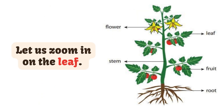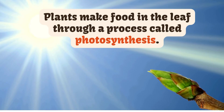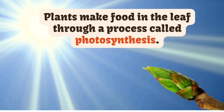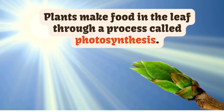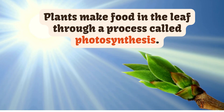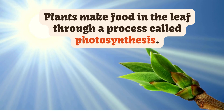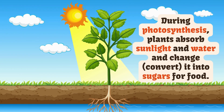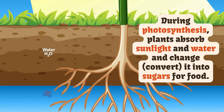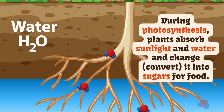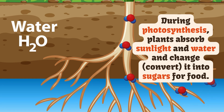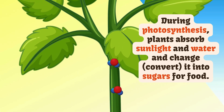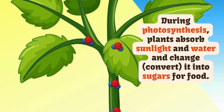Let us zoom in on the leaf. Plants make food in the leaf through a process called photosynthesis. During photosynthesis, plants absorb sunlight and water and change — or convert — it into sugars for food.